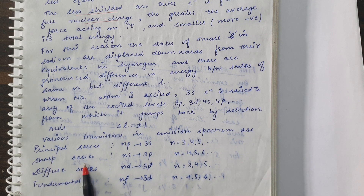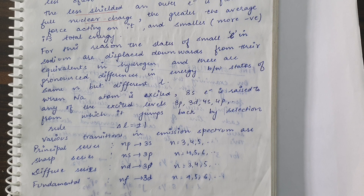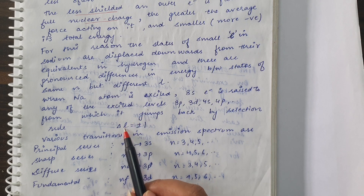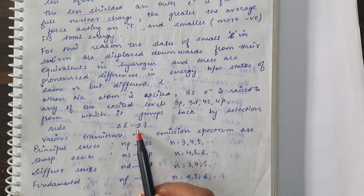The sharp series means the excited state has the electron in an S state, and the lowest excited S state is 4S. So transitions from NS → 3P, where N = 4, 5, 6, 7, and so on. Both of these series follow the selection rule ΔL = ±1.